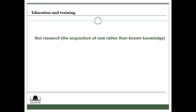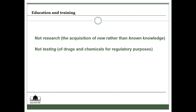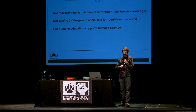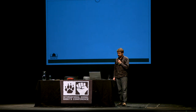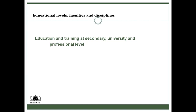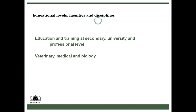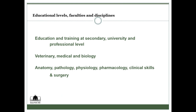In terms of this field, we're not talking about research — the finding of new knowledge — and we're not talking about testing of drugs and chemicals for regulatory purposes. We're talking about humane education, which does feed into humane science, humane research, and humane testing. But there are some differences between these fields, and it's very useful to be clear of those differences, as well as the connections between them. We focus on education and training at secondary, university, and professional level — primarily university level, where students are learning those life science degrees: medical, veterinary, and biology.